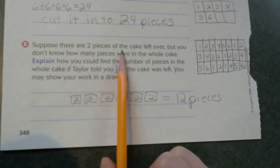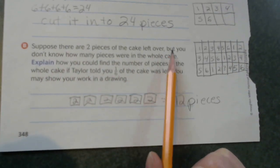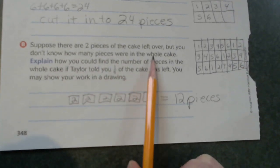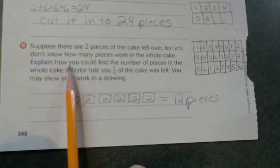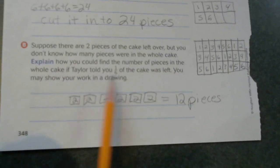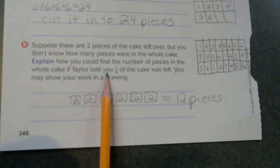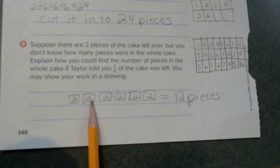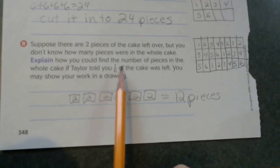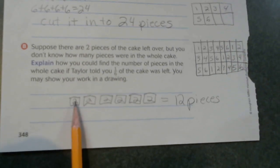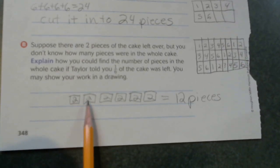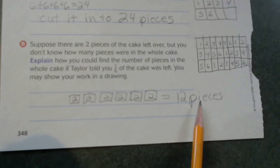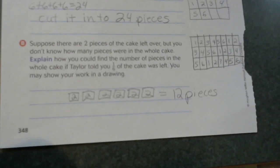Suppose there are two pieces of cake left over, but you don't know how many pieces were in the whole cake. Explain how you could find the number of pieces in the whole cake if Taylor told you one sixth of the cake was left. I drew six pieces because that's one sixth and there were two left. So two, four, six, eight, 10, 12 tells me that there were 12 pieces total in the cake.